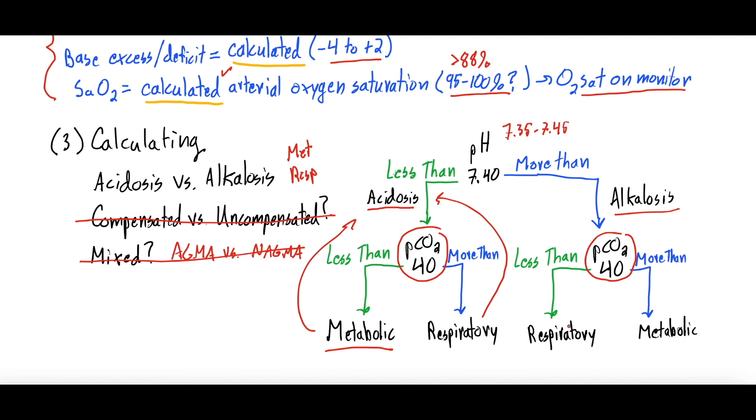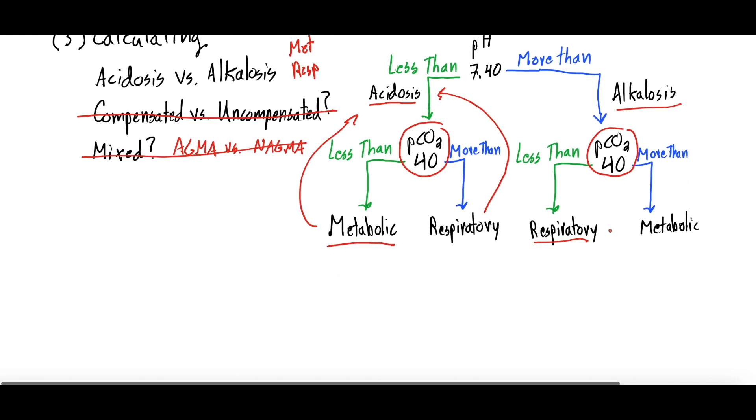If your pH is less than 7.4 and your PCO2 is more than 40, that's a respiratory acidosis. Again, then you look at your alkalosis. Then you look at your PCO2. If your PCO2 is less than 40, that is a respiratory alkalosis. If your PCO2 is more than 40, that's a metabolic alkalosis.